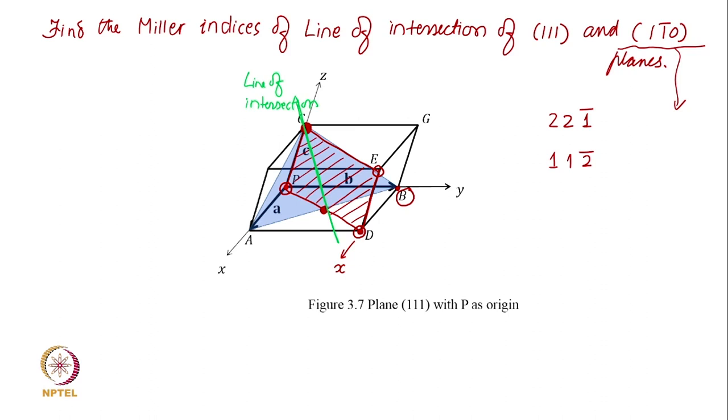For Miller indices, what will be the convenient origin? C. From C I want to go to this bottom face center. From C the x axis is coming here, y axis is coming here, and z is going that way.